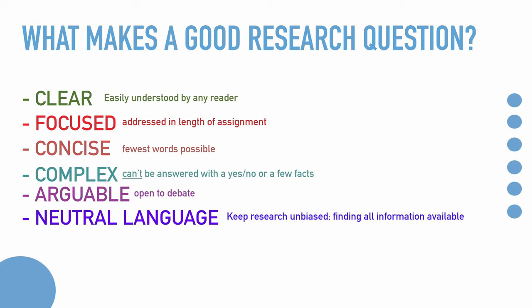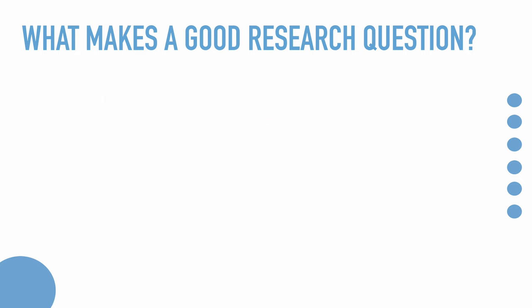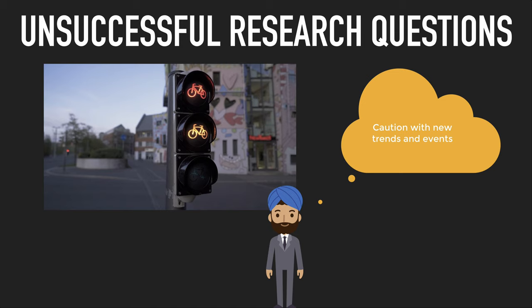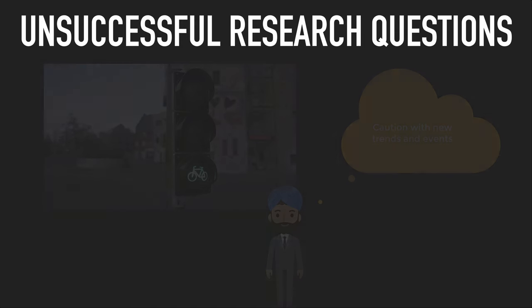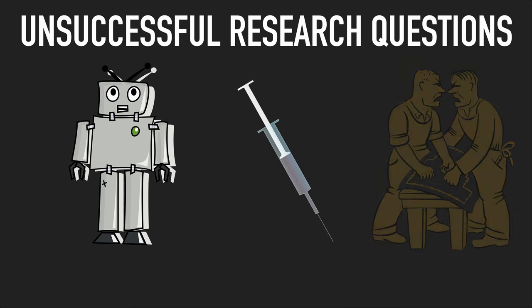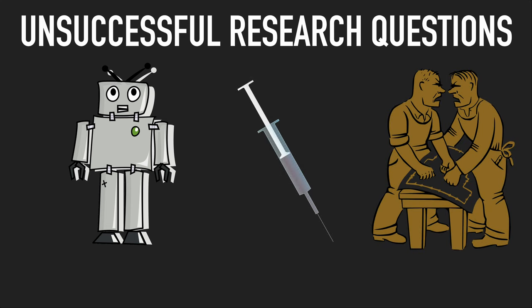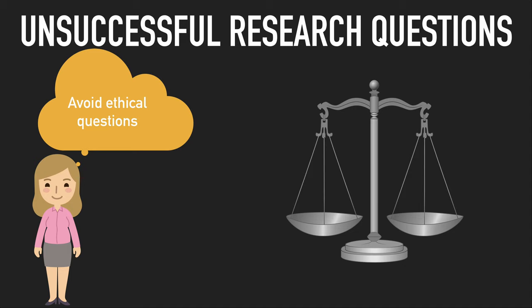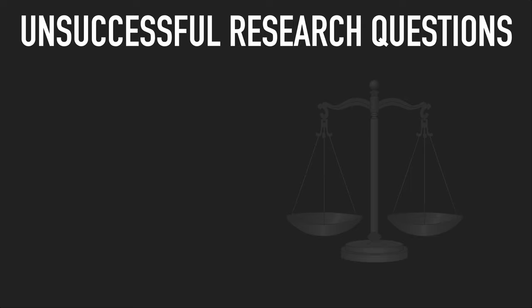Now that we know what a good research question is, it's helpful to examine what an unsuccessful one looks like. First, be cautious when researching new trends and events. Topics like new technological advances, new medical treatments, or recent international conflicts may be too new to appear in scholarly literature. You should also avoid ethical questions like whether something should be legal or if it is right or wrong, as these have no simple solutions and are endlessly debatable.